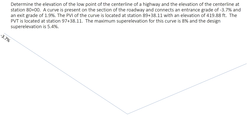So even if it's just rough and not necessarily to scale, we're going to start with that entrance grade. So our G1 is negative 3.7%. G2 is 1.9%.